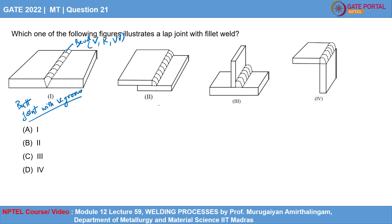Now looking at the second figure, the two plates are lying one upon the other and they are joined using a fillet weld. This configuration is known as a lap configuration — it is a lap joint with fillet weld.